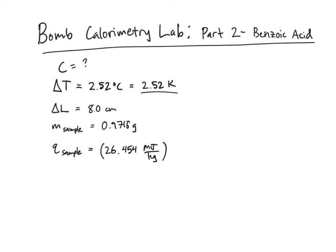Multiplied times the mass of the sample. However, I don't want to deal in megajoules per kilogram. I can actually convert megajoules to kilojoules and kilograms to grams, and I'm going to get 26.454 kilojoules per gram.